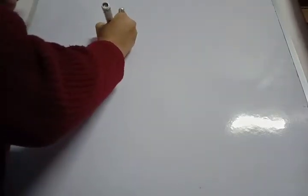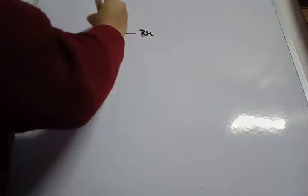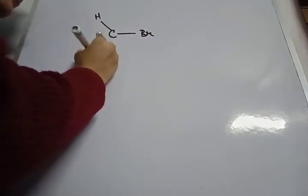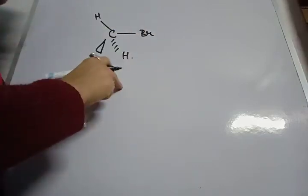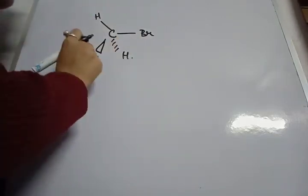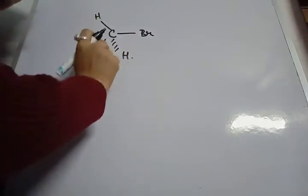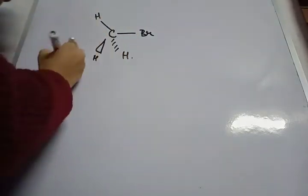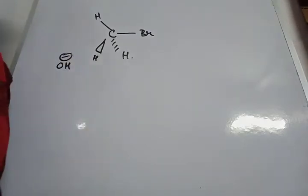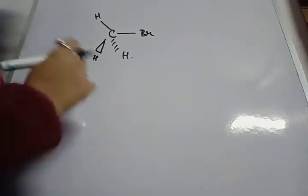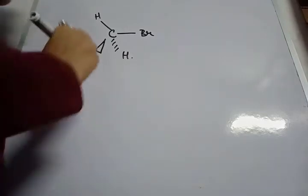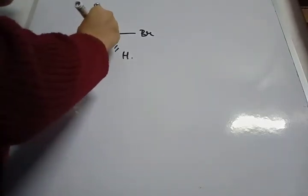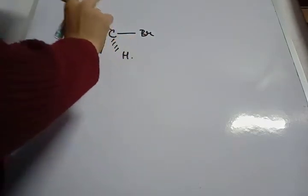As an example, take the reaction between methyl bromide (CH₃Br) and aqueous KOH. This is CH₃Br drawn showing the plane, the bond above the plane, and the bond below the plane. Aqueous KOH provides OH⁻, which is the incoming nucleophile. It attacks from the opposite side — this is the backside attack — because the inside attack is hindered by the existing bond.